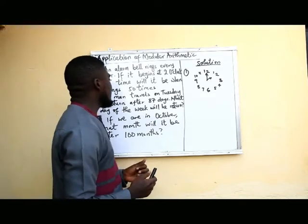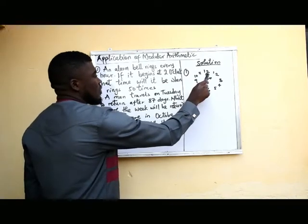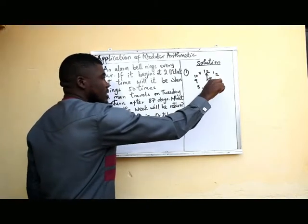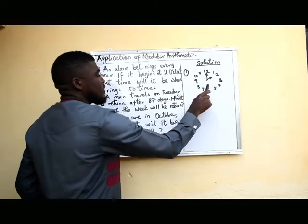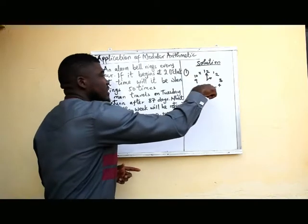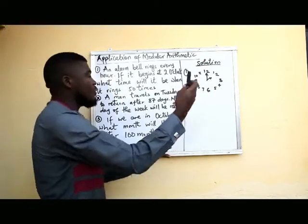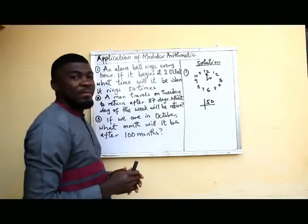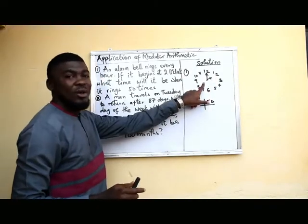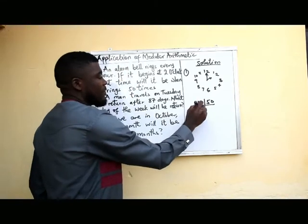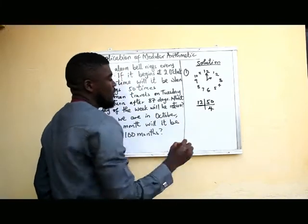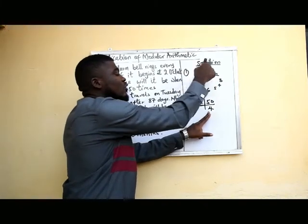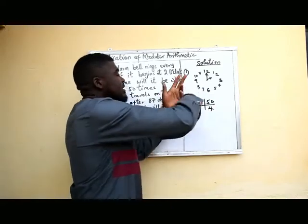The alarm bell rings every hour. From 2 o'clock, 3 o'clock, 4 o'clock — it keeps on ringing, going round the circle and wrapping round as it rings 50 times. We need to find the number of times it wraps round, so we divide 50 by the available numbers on the clock, which is 12. This means we are working in mod 12. Dividing 50 by 12 gives us 4, meaning the bell goes round the clock 4 times.